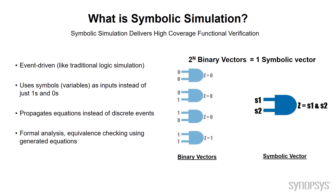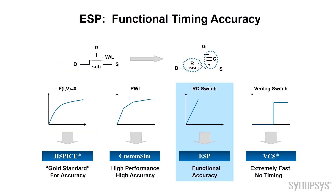More information on symbolic simulation is available in the video Bridging the Gap: Symbolic Simulation. ESP uses a simple model of a transistor — a switch with a capacitor for the gate and a resistor for the drain-source channel. This model works well for digital designs. More information on the ESP device models is available in the video Bridging the Gap: The ESP Transistor Model.